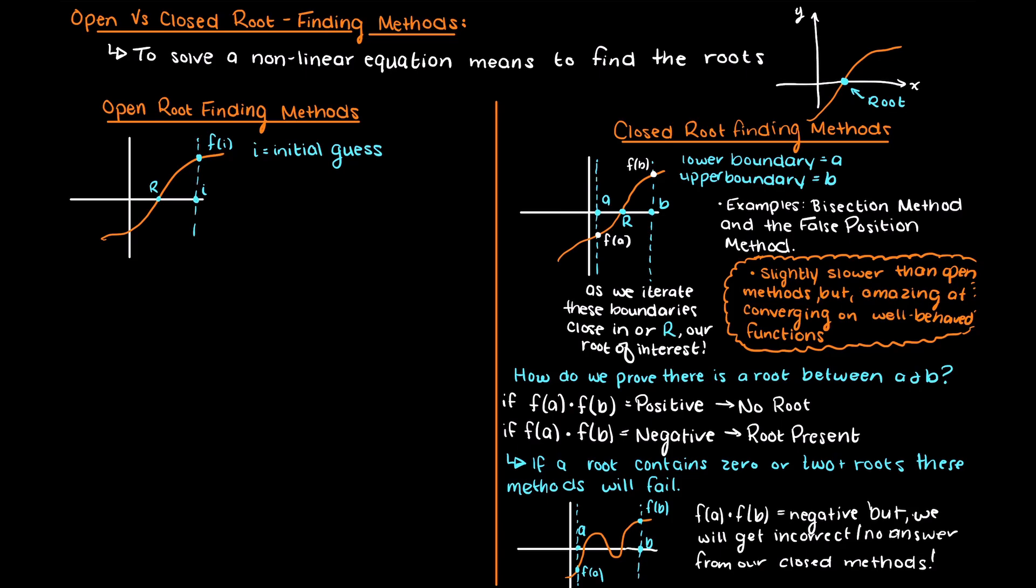in open root finding methods we just make an initial guess and depending on factors such as the slope of the function we can determine in which direction we need to move from our initial guess to where we think the root is located. Some examples of open root finding methods are Newton's method and the secant method.